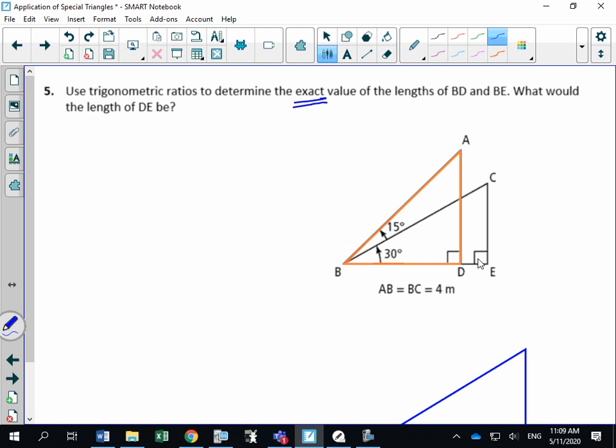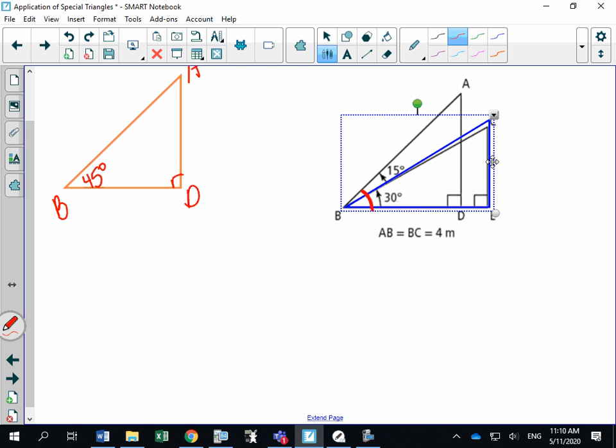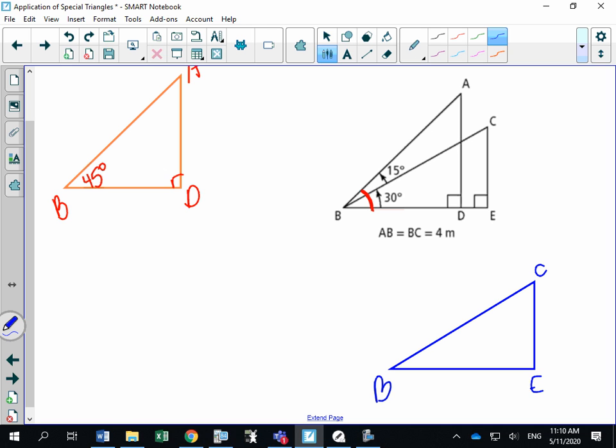What I would do, the first thing I would do is take these two triangles and draw these two triangles separately. So this triangle here, ABD, draw that off to the side and let's label that. So ABD, this is a 90 degree angle and this angle here would be 30 degrees plus 15 degrees, which is angle B would be a 45 degree angle. And then this triangle down here, take this triangle and draw that off to the side. So this would be B, C, E. There's my 90 degree and this is a 30 degree angle.